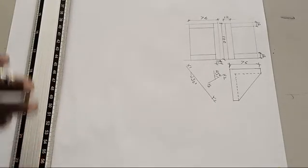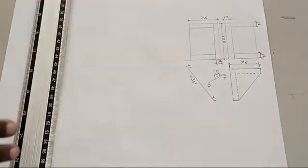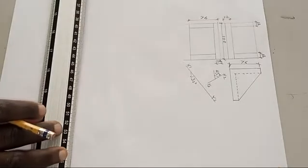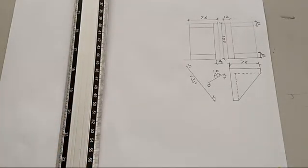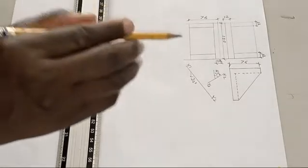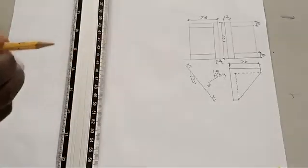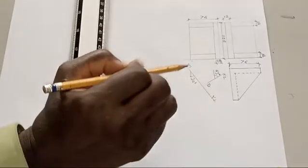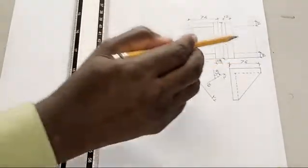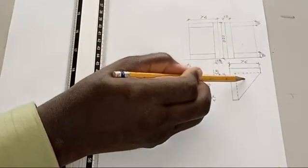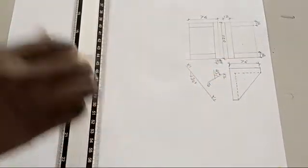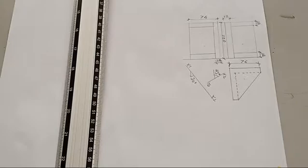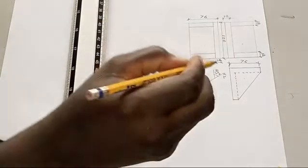Welcome to my channel. Today we'll be treating the topic auxiliary projection and we'll be drawing the auxiliary plan and auxiliary elevation of this block right here. This is the front elevation, this is the side elevation, and this is the plan. First thing to do in auxiliary projection is for you to be able to draw the elevations and convert them to isometric.